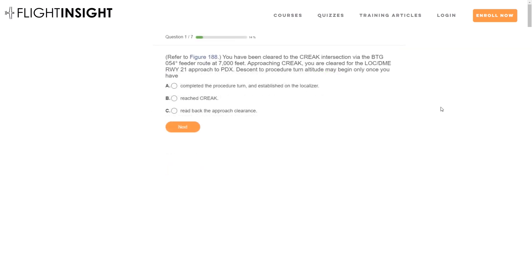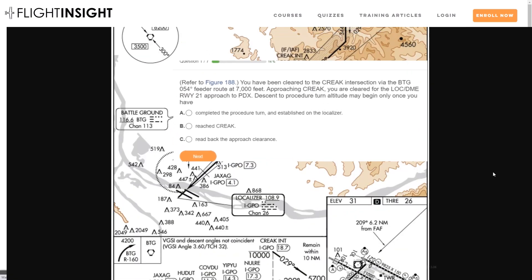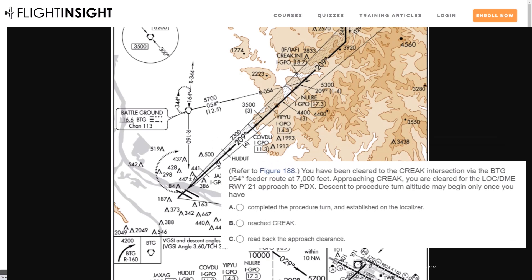Number two: refer to figure 188. You've been cleared to Creek via the BTG 054-degree feeder route at 7,000 feet. Approaching Creek, you're cleared for the LOC DME runway 21 approach into PDX. Descent to procedure turn altitude may begin only once you have: A, completed the procedure turn and established on the localizer; B, reached Creek; or C, read back the approach clearance. Here's the approach plate referenced in the question. Creek is the initial approach fix, and we're flying to it along the feeder route from the Battleground VOR at 7,000 feet.